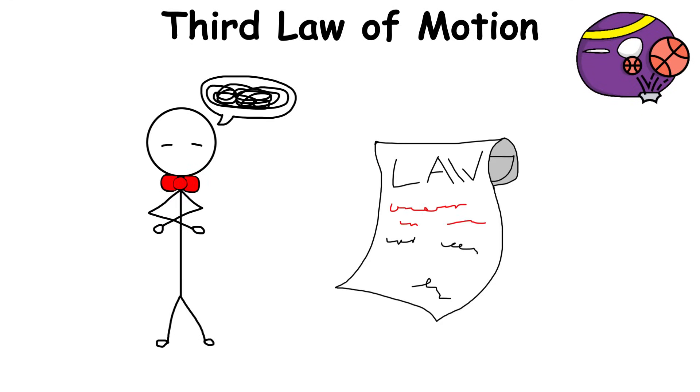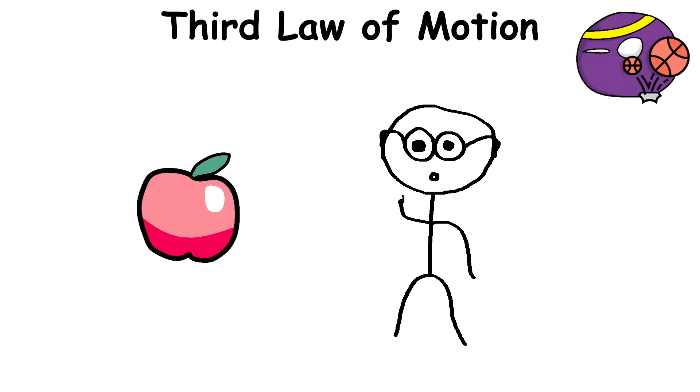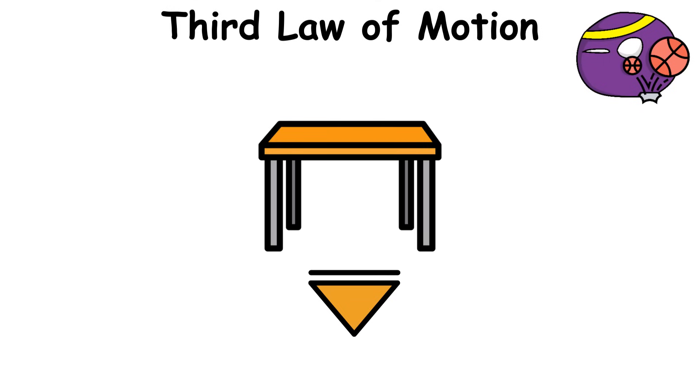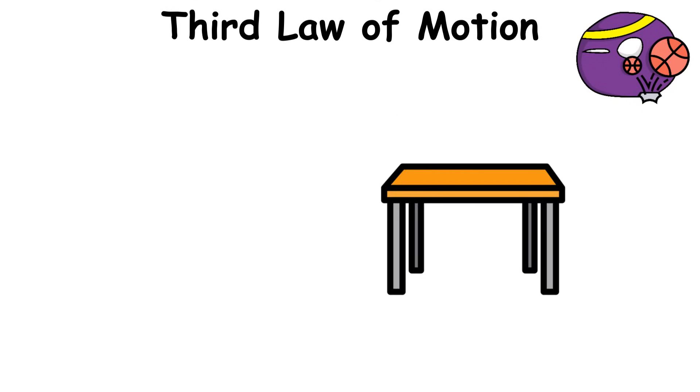The bizarre part is that this law applies to objects that aren't in motion. Gravity's force of attraction pulls your desk down to the floor, causing the floor to exert the same force on your table, allowing it to stay where it is.